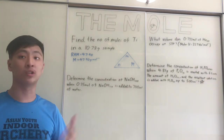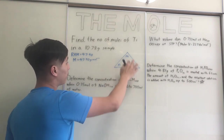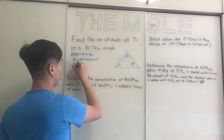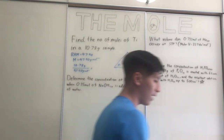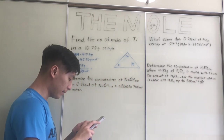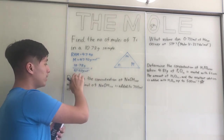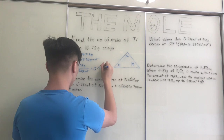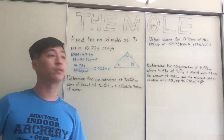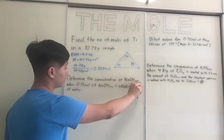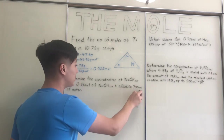For the next question: determine the concentration of NaOH (sodium hydroxide) when 0.35 moles of solid sodium hydroxide is added to 700 cm³ of water. I'll use another triangle: number of moles N, volume of solution V, and concentration C. We know 0.35 moles and 700 cm³, but concentration is measured in moles per dm³, so we need to convert cm³ to dm³.